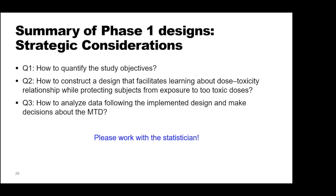In summary, some strategic questions to consider when designing phase one trials: first, how to quantify the study objectives; second, how to construct a design that facilitates learning about the dose-toxicity relationship while protecting participants from exposure to toxic doses; and finally, how to analyze data following the implemented design and make decisions about the maximum tolerated dose. The best piece of advice is that it should be a collaborative work — please work with the statistician.